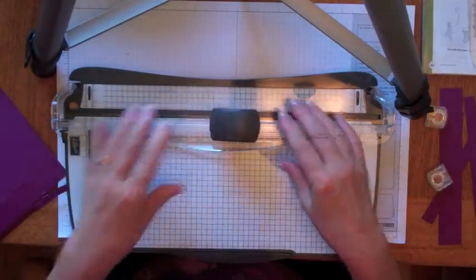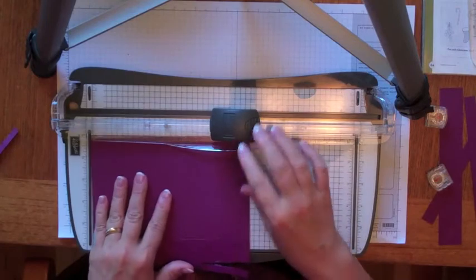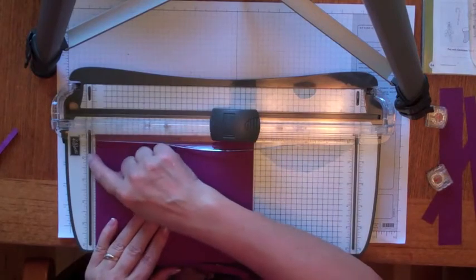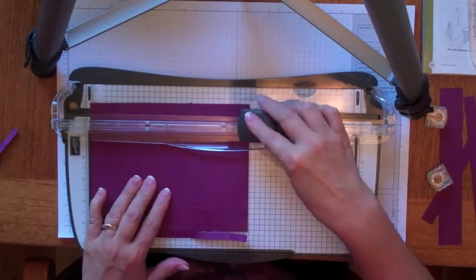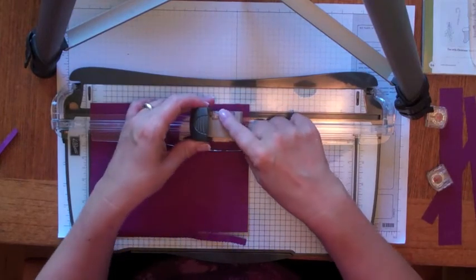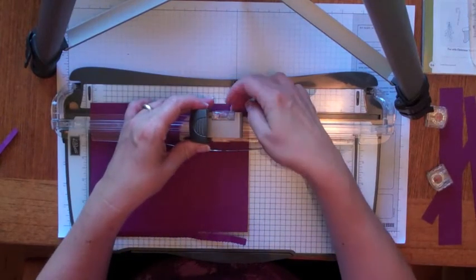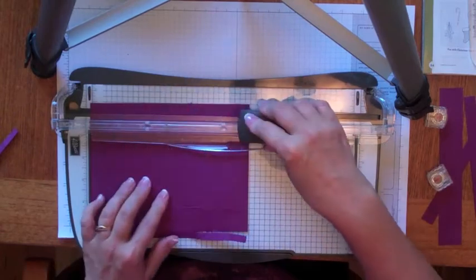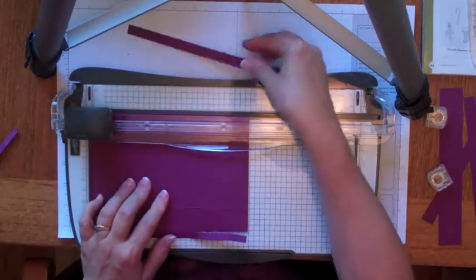So to cut with this, you're just going to slide your paper in so the top of the paper is right up against the guide here. And then just pressing down, when you press down it pushes the blade out of this little protective case onto your paper so that it can cut. Just like so.